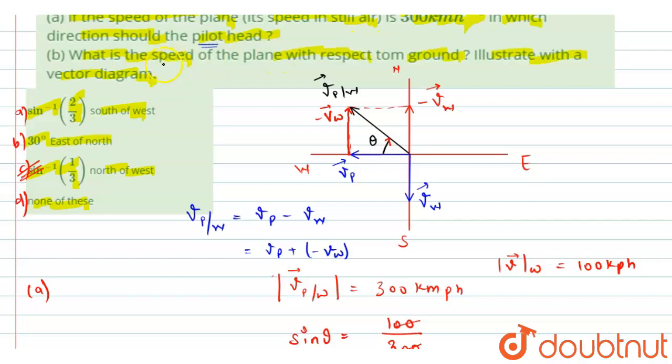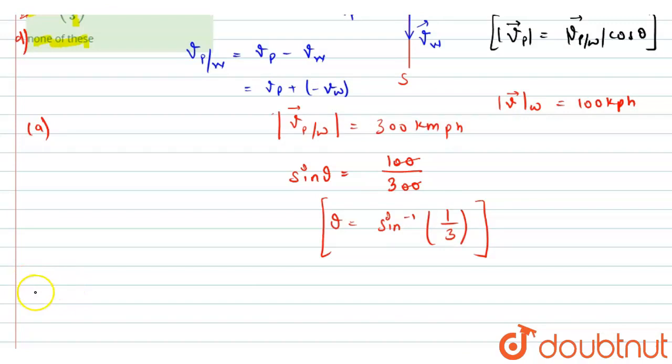And now coming to part B, we have to find the speed of the plane with respect to ground. So from the vector diagram, we can see the velocity of plane is equal to velocity of plane with respect to wind cos θ. So from here, we can find the magnitude of the velocity of plane with respect to ground.